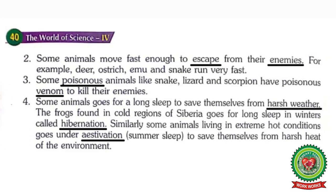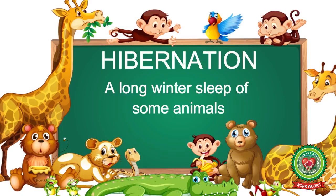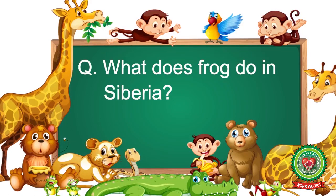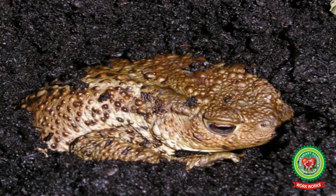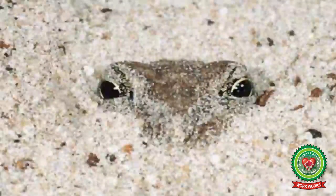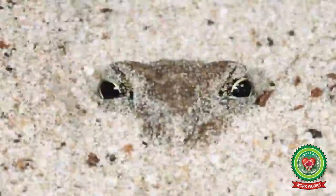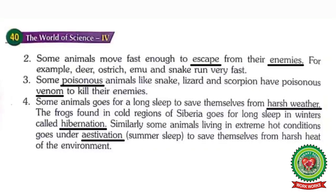Number four: some animals go for a long sleep to save themselves from harsh weather. Underline 'harsh' — meaning unpleasant. For example, the frog found in the cold regions of Siberia goes for a long sleep in winter called hibernation. Underline 'hibernation' and write down its meaning: a long winter sleep of some animals. The frog in Siberia undergoes winter sleep, and in this way the frog protects itself from the harsh cold environment.